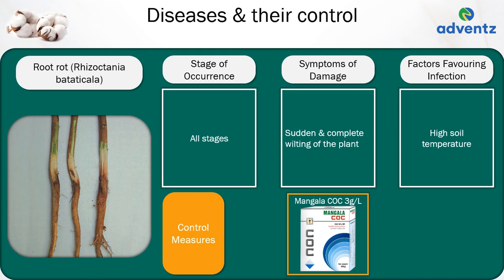The next disease is root rot. The causal organism is Rhizoctonia bataticola. It can occur at all stages. The symptoms of damage are sudden and complete wilting of the plant. High soil temperature favours the occurrence of root rot. Control: apply Mangala COC at 3 grams per litre.